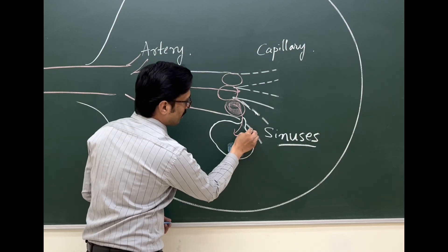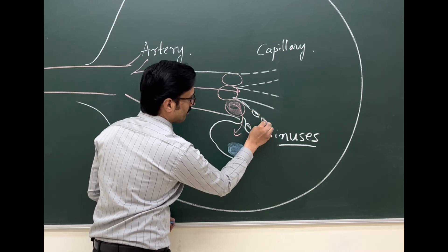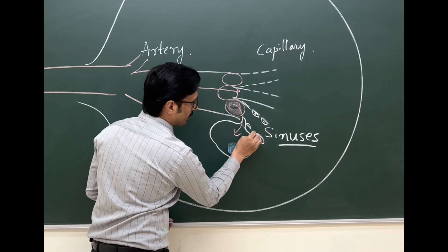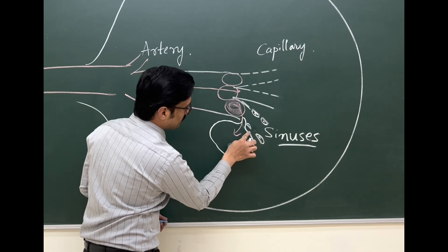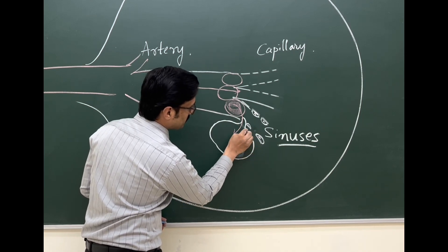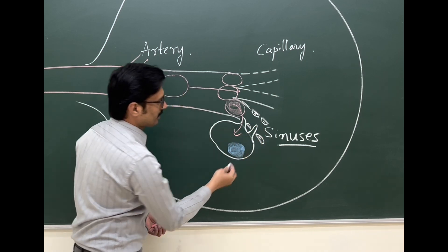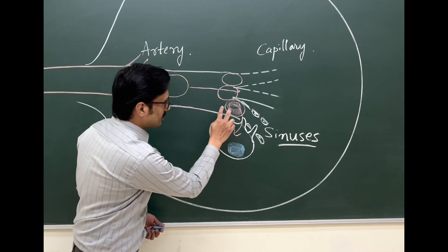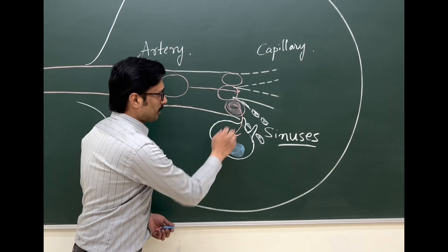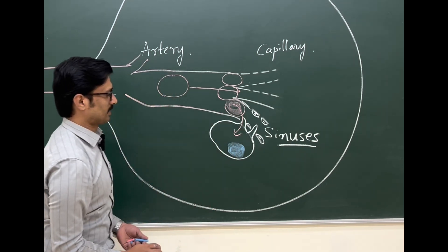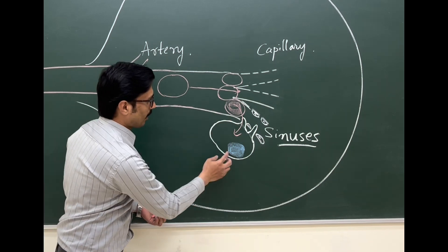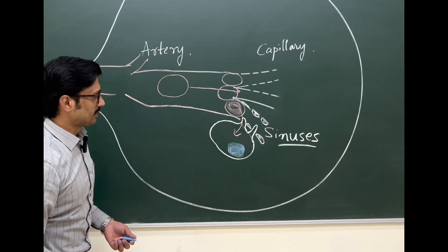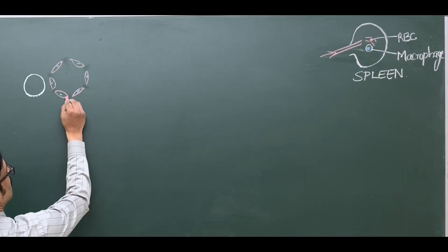These sinuses are thin-walled, having a single layer of epithelium, and they are fenestrated — there are pores. Through these pores, the macrophage can extend into the sinus lumen, recognize the trapped old RBC, and cause phagocytosis. Let us now explain how the macrophage causes phagocytosis of the RBCs.